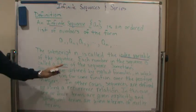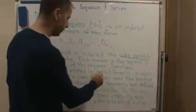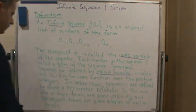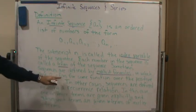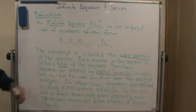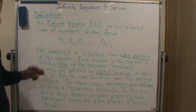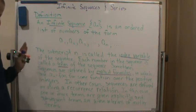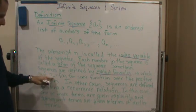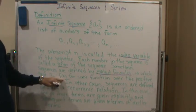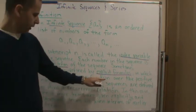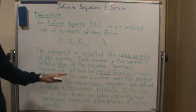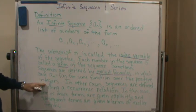Now sometimes sequences are defined by explicit formulas, in which case a sub n equals f sub n. So here's one thing that I didn't mention before. If we can write an infinite sequence as an explicit formula, then we can look at a sub n as a function of n, where n takes on only integer values. So in other words, f of n is a function of the positive integers.